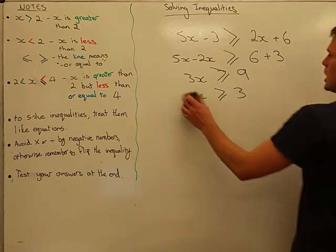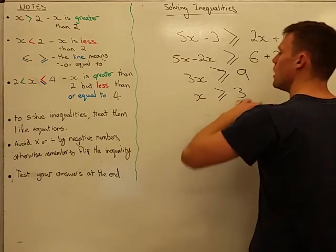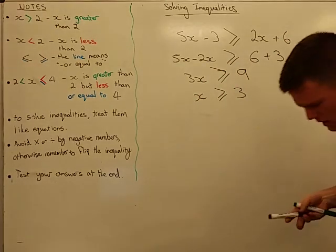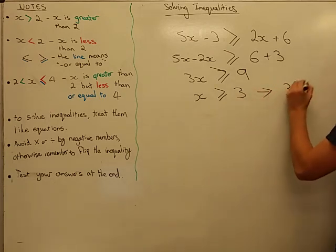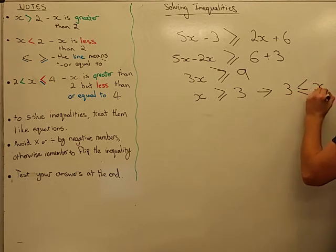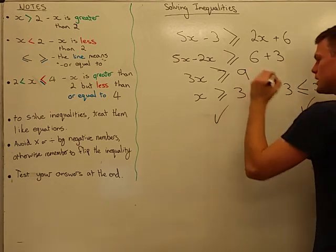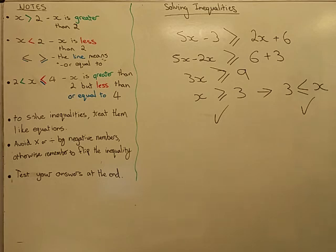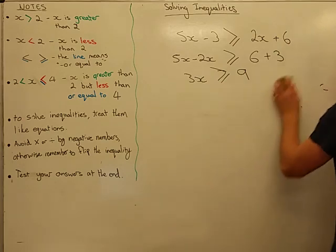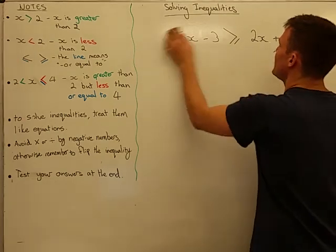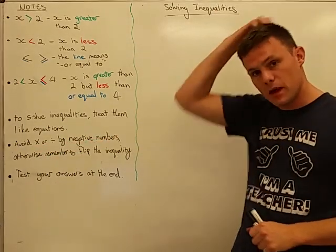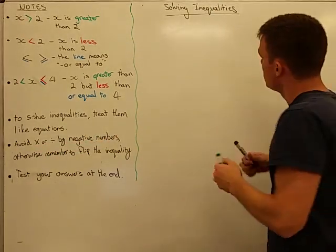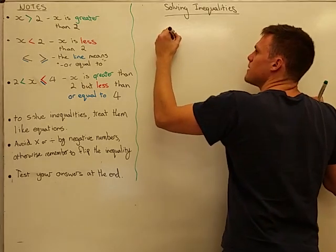A little bit of a catch here — I could rewrite x greater than or equal to 3 as 3 is less than or equal to x, and both are totally acceptable. This idea becomes very important because a lot of us are totally fine with working with negative numbers. I've written here: avoid multiplying or dividing by negative numbers, and there's a reason for this.